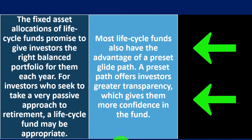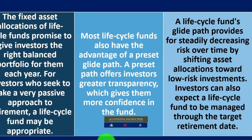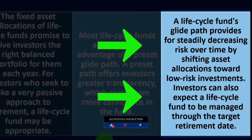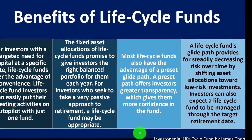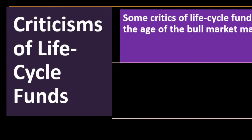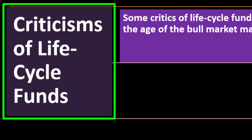Most life cycle funds also have the advantage of a preset glide path. A preset path offers investors greater transparency, which gives them more confidence in the fund. A life cycle fund's glide path provides for steadily decreasing risk over time by shifting asset allocations towards low-risk investments. Investors can also expect a life cycle fund to be managed through the target retirement date.